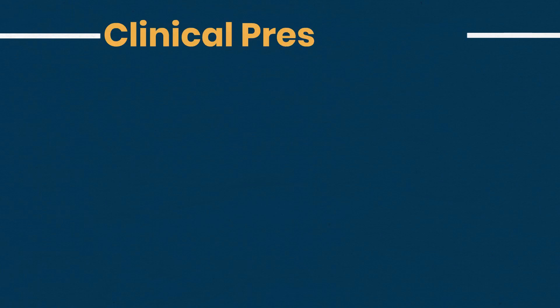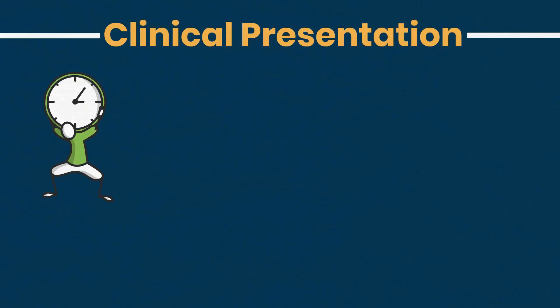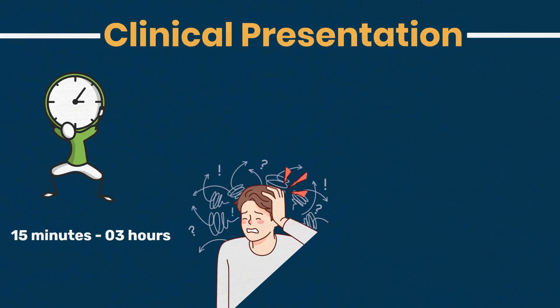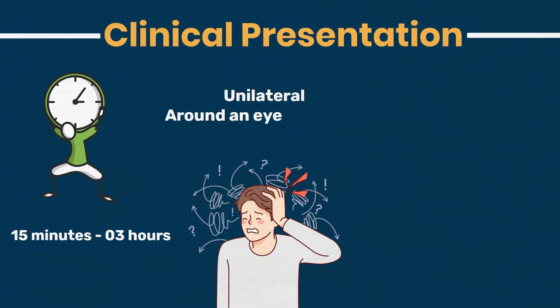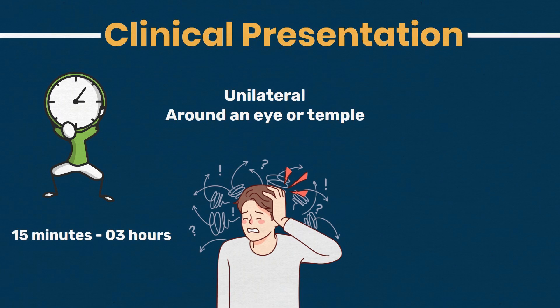The pain of a cluster headache is often described as intense and debilitating, reaching its peak within minutes and lasting anywhere from 15 minutes to 3 hours. The pain is usually unilateral, centered around one eye or temple, although it can sometimes radiate to other areas of the face, head, or neck.